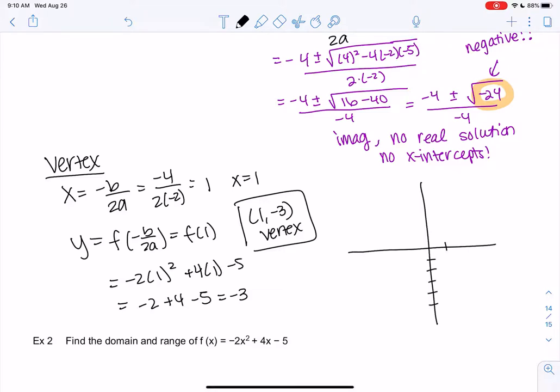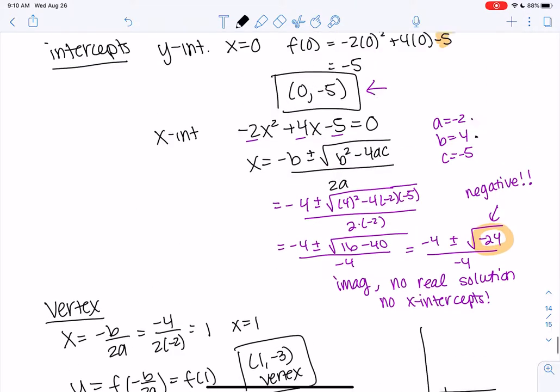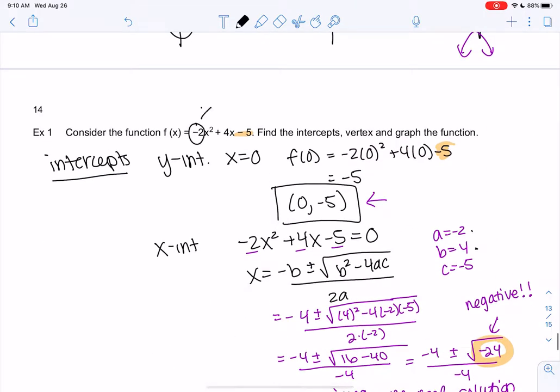So 1 negative 3 is right here. And then I think we also had 0 negative 5 was my intercept. And then one more thing. So because a is negative, that means the graph opens down rather than up.